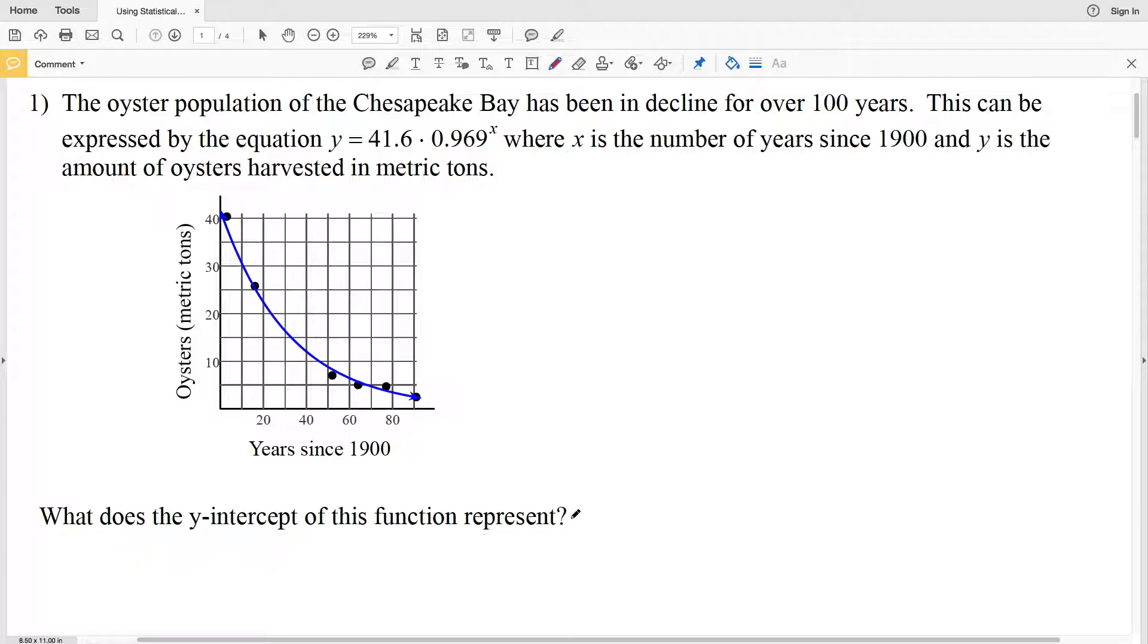Our question associated with this information is what does the y-intercept of this function represent? The y-intercept is where our graph intersects the y-axis. According to our data, the X values represent the years since 1900 and the Y values represent the amount of oysters harvested in metric tons.